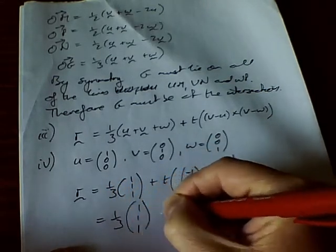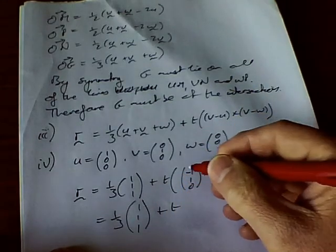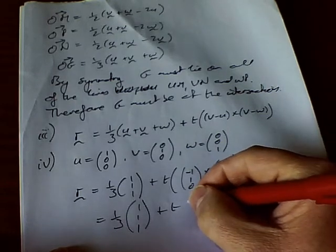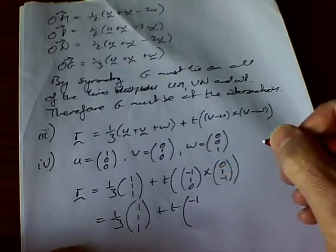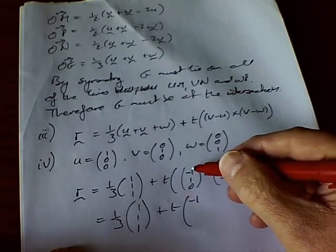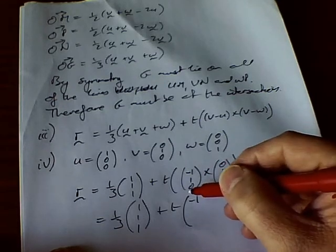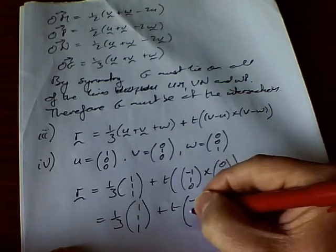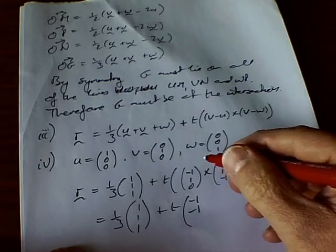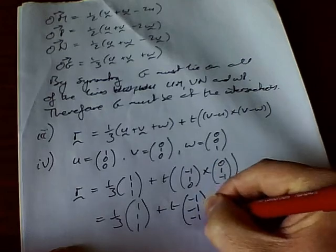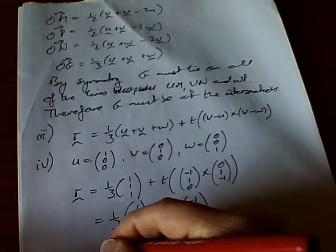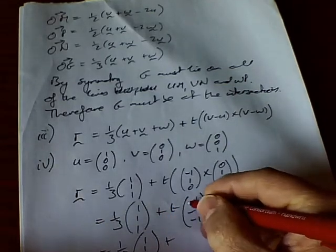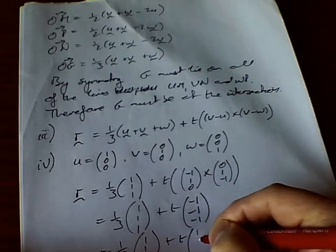Working out the cross product of (−1, 1, 0) and (0, 1, −1): the i component is (1×−1 − 0×1) = −1; the j component is minus (−1×−1 − 0×0) = −1; and the k component is (−1×1 − 1×0) = −1. So the cross product is (−1, −1, −1). Dividing t by minus one, I can simply write this as t(1, 1, 1). So r equals one-third times (1, 1, 1) plus t times (1, 1, 1).